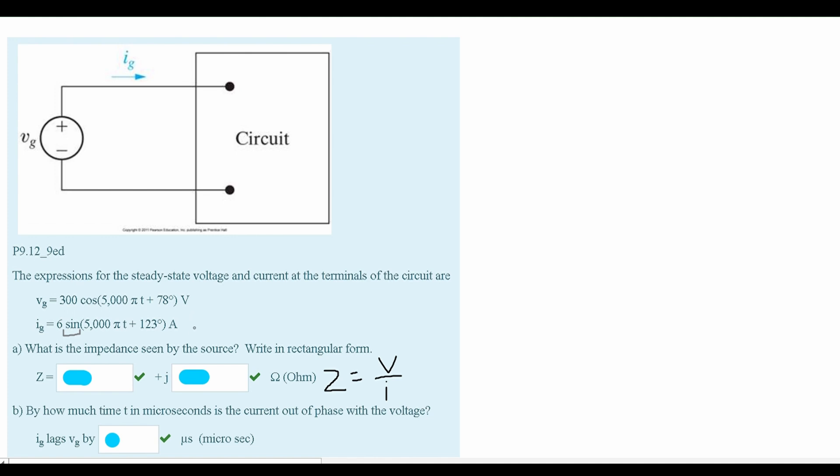So when we are writing out our polar form here, we are going to have the 6, and then inside of our angle we will have negative 90 degrees, because cosine is 90 degrees behind sine, plus the 123 degrees. This gives us Vmax is 6 and angle is 33 degrees. For Vg, we don't have to convert anything, so we have 300 with phase angle of 78 degrees.